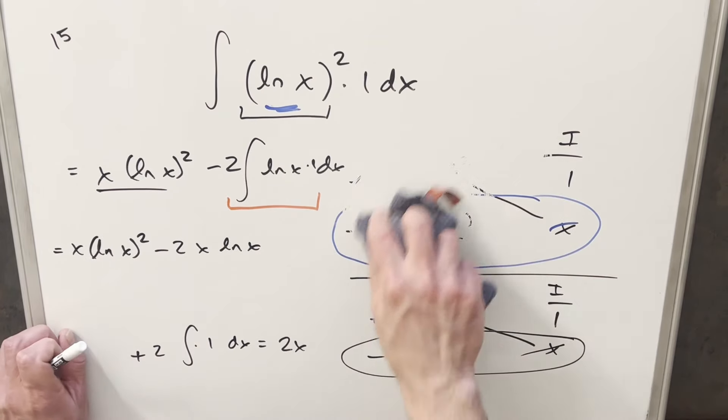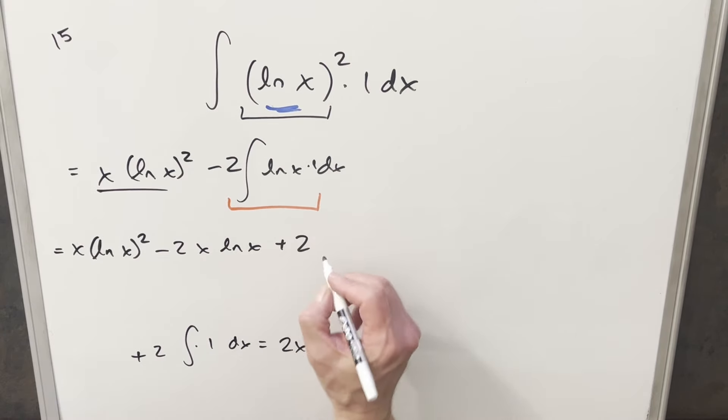So let's just make a little bit of space. We'll take this 2x, we'll add it onto our solution, and we'll tack on a plus C, and that's it.